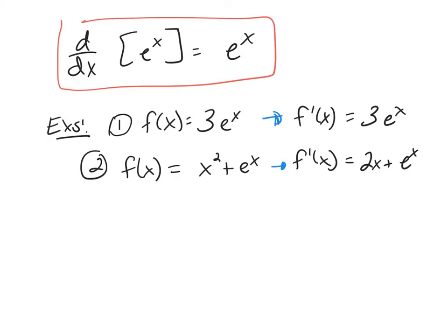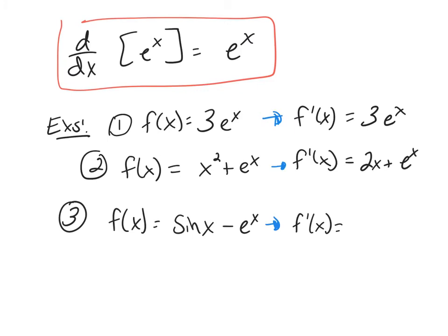For the third example, what is the derivative of sine x minus e to the x? The derivative of sine is cosine, and the derivative of e to the x is e to the x. So the derivative is cosine x minus e to the x.